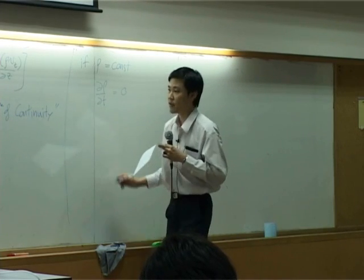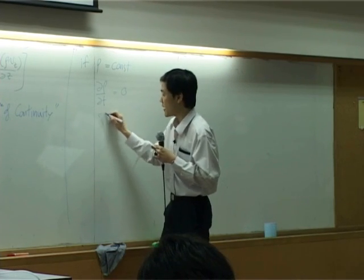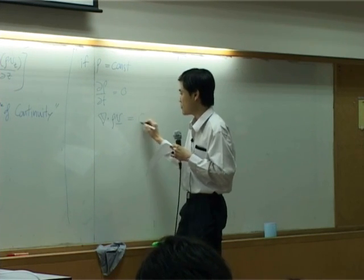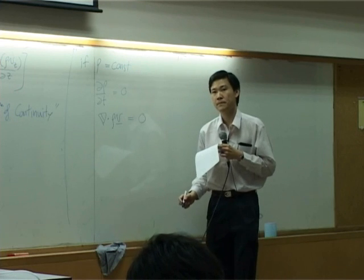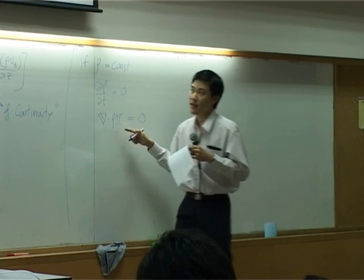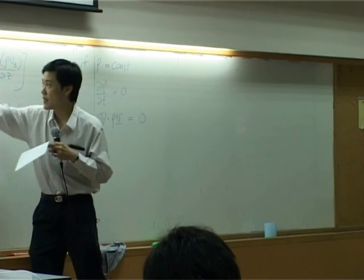So from that equation of continuity, you get del dot rho v equal to zero. And del dot rho v is basically these three differential, differentiation combined.